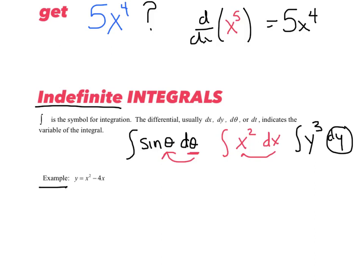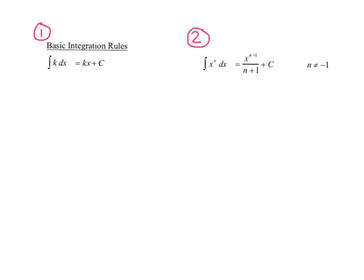So the first example: we're going to integrate this function. I would say this is the integral of x squared minus 4x — that's who I'm integrating — and I would slap a dx there to let the reader know that I am integrating with respect to x.